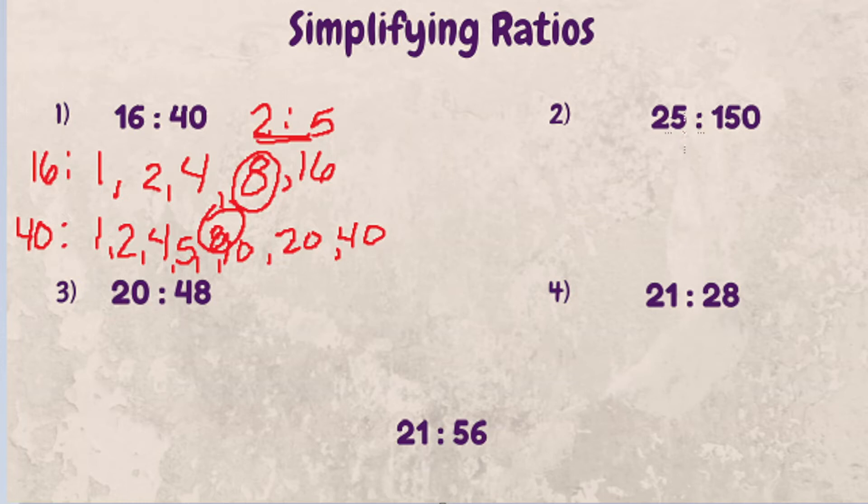We know that 5 can go into 25 and 5 can go into 150 because this number ends in 5 and this one number ends in 0. We know that from our divisibility rules. So let's just reduce it down once and see if that gets us there. Let's divide 25 by 5 and we get 5. If we divide 150 by 5, 5 goes into 15 three times at the 0, so the ratio is now 5 to 30.